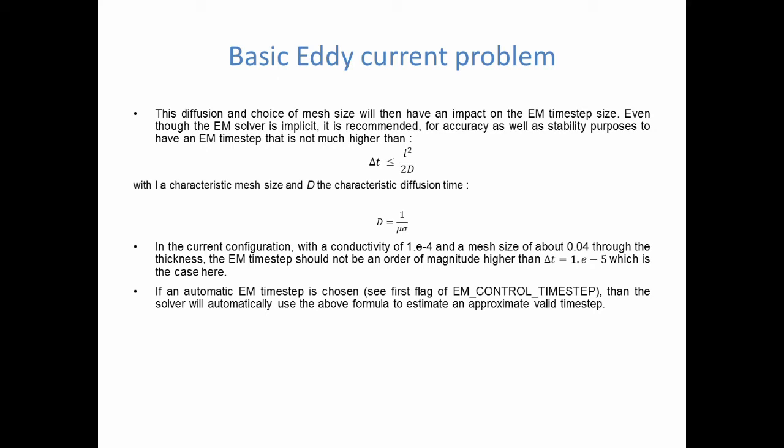Finally, another important point, now that we have chosen our mesh size, this also gives us an additional condition on the electromagnetic time step. Indeed, even though the solver is implicit, and so an implicit solver should basically allow any kind of time step, what we have seen is that for accuracy but also for stability purposes, it is advised to pick an EM time step which does not stray too far away from its CFL condition.